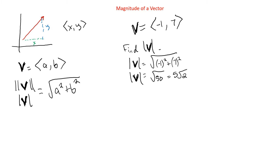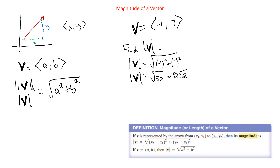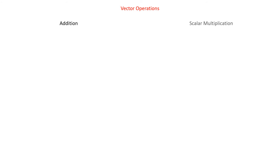Notice that the magnitude is just a number, because it's a length — and a number is called a scalar. We have two different things we're dealing with: vectors, which look kind of like an ordered pair with two components, and scalars like the magnitude, which is just a number. We're going to use both of these in our vector operations.